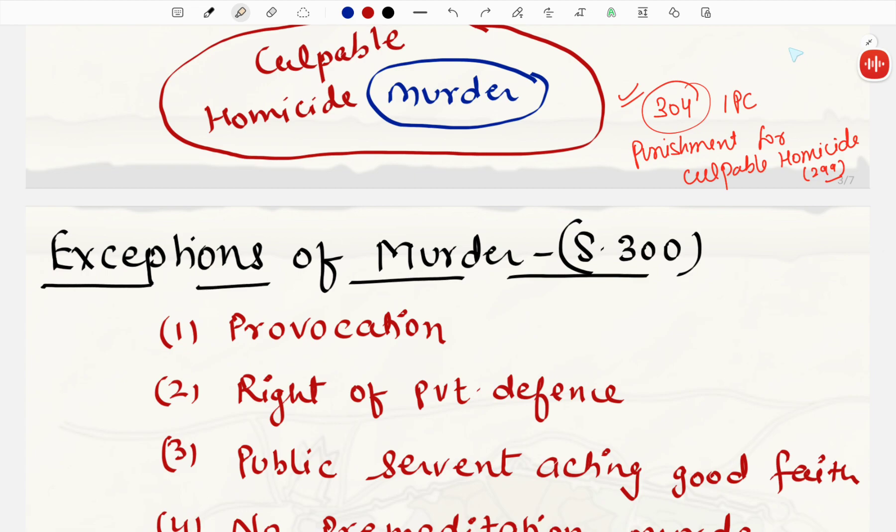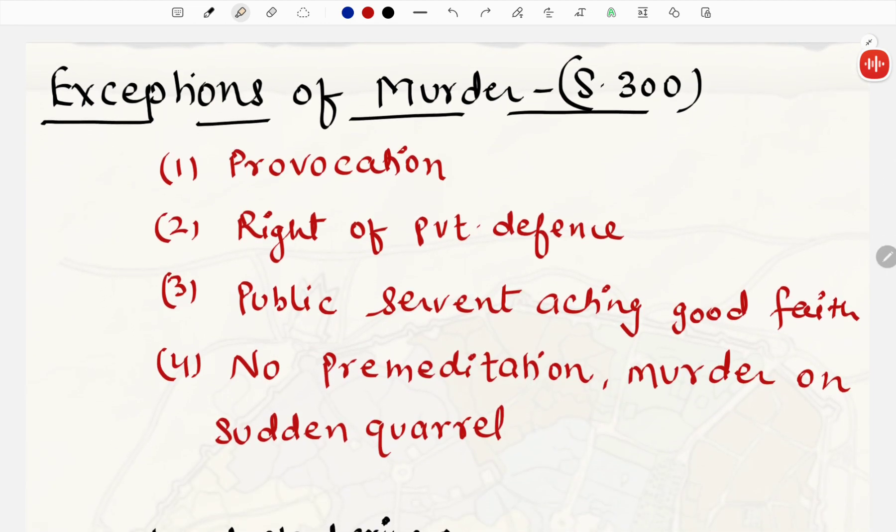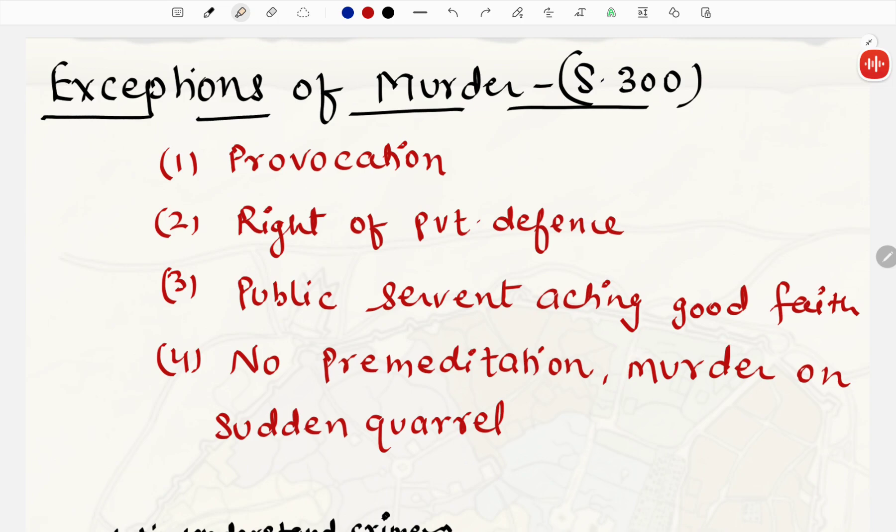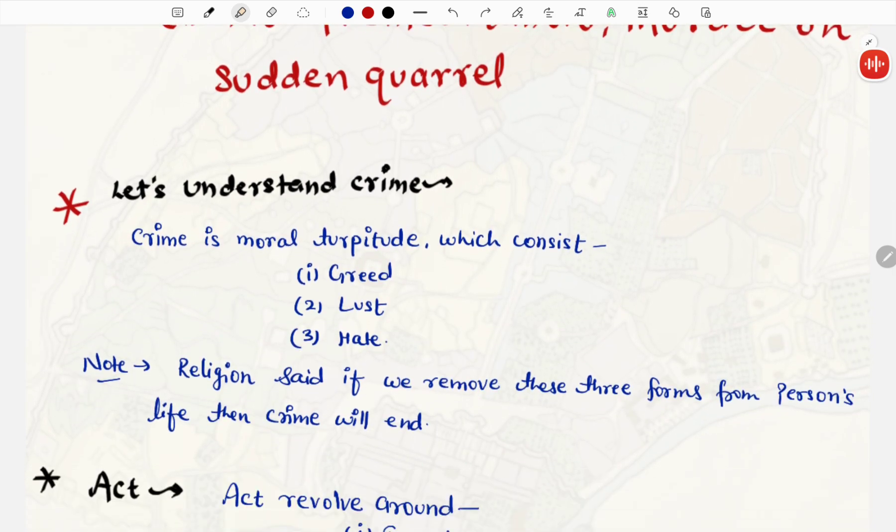Next, there are some exceptions for murder, jo section 300 mein likha hua hai. Uske bhi kai exceptions hai, ki murder kab nahi maana ja sakta. Agar koi aapko provoke kar raha hai, there is provocation. Then, there are some exceptions. This act is not going to be amount as a murder. Second exception hai, right of private defense. Third exception hai, public servant acting good. And fourth exception hai, no premeditation, murder on sudden quarrel. Generally, jo suddenly jhada hua, aur with no intention death cause ho gai. Ye are exceptions hai murder ke, jinhe hum detail mein discuss karenge further on.